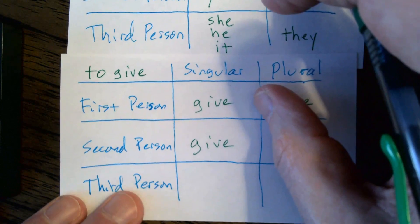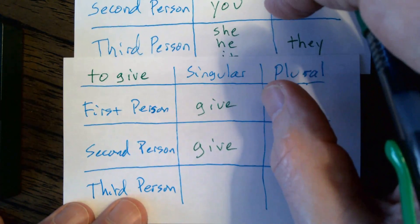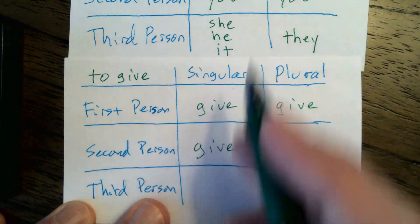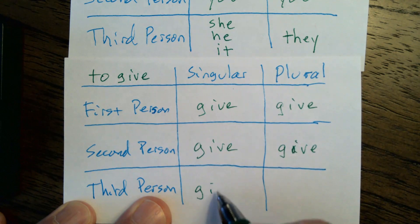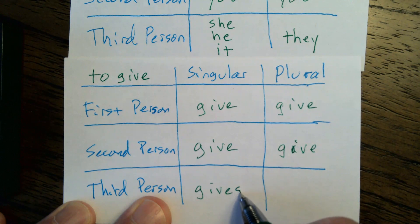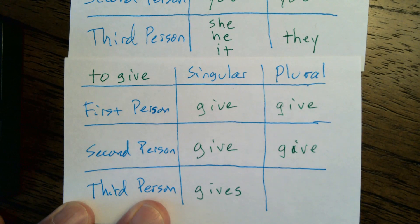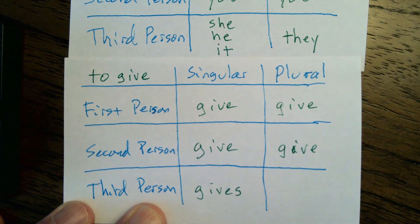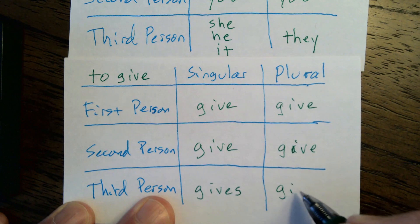Then I look at third person. Third person singular, third person plural. She gives. He gives. It gives. Third person plural: They give.